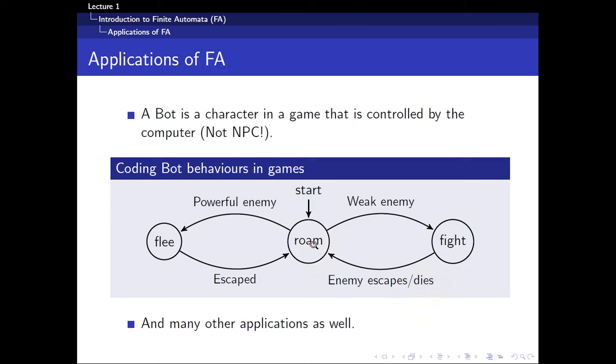Suppose your bot is roaming around and it encounters a weak enemy. Of course you proceed to fight it to the point where either the enemy escapes or it dies, and if it does it will just return back to roaming. If it encounters a powerful enemy, it will begin to flee, and if it manages to escape the powerful enemy, you'll just return to the original state of roaming. You can see that this simple finite automaton here captures very simple bot behavior within games. Of course there are many other applications as well.